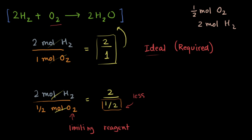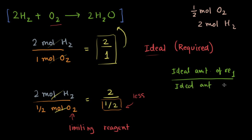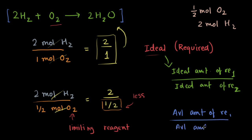To generalize this: compare the ideal amount of reactant 1 over the ideal amount of reactant 2 — which is the ideal mole ratio — to the available amount of reactant 1 over the available amount of reactant 2. All values will be in moles. That's how you find the limiting reagent.